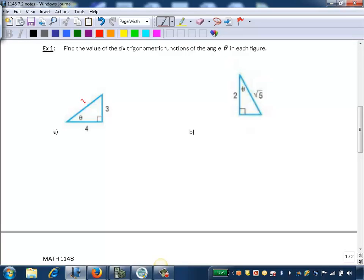If I call this side x, I can say 3 squared plus 4 squared equals x squared. So 3 squared is 9, 4 squared is 16, so 9 and 16 give us 25 equals x squared.